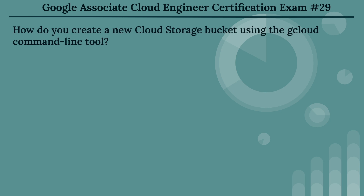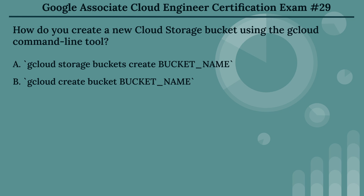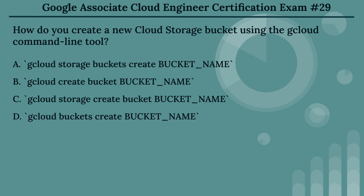The twenty-ninth question: how do you create a new Cloud Storage bucket using the cloud command line tool? The options are: Option A, gcloud storage buckets create BUCKET_NAME. Option B, gcloud create bucket BUCKET_NAME. Option C, gcloud storage create BUCKET_NAME. Option D, gcloud buckets create BUCKET_NAME.